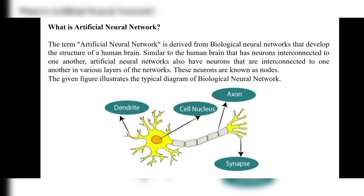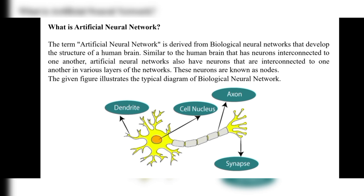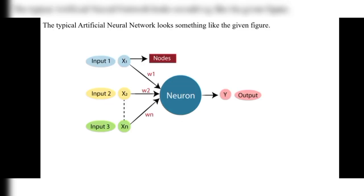The given figure illustrates the typical diagram of a biological neural network. In this, we have the cell nucleus, axon, synapse, and dendrite — this is the structure of the biological neural network and how it is going to perform. Let's now see what the typical artificial neural network looks like.